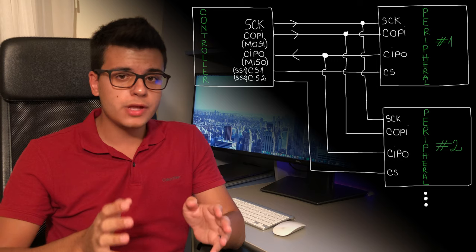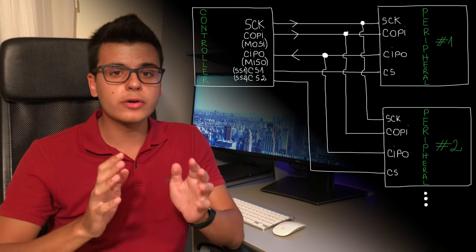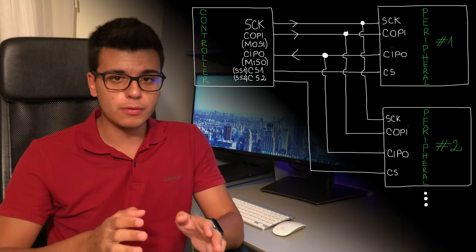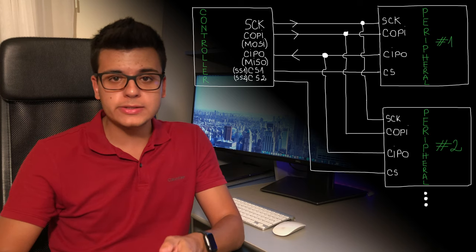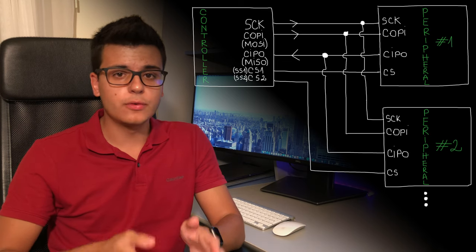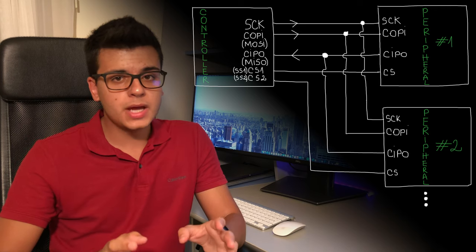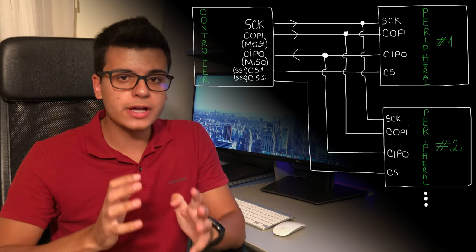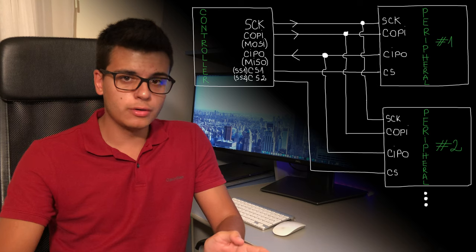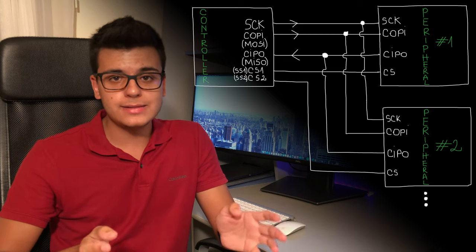As far as data lines go, we have two: MOSI or COPI, which stands for Controller Out Peripheral In, and MISO or CIPO, which stands for Controller In Peripheral Out. Unlike UART, SPI is synchronous, meaning we have a clock line between the controller and peripherals called SCK. Only the controller can output a clock signal, and communication only happens when there is a clock signal on that line — so a peripheral cannot start a data transfer on its own.